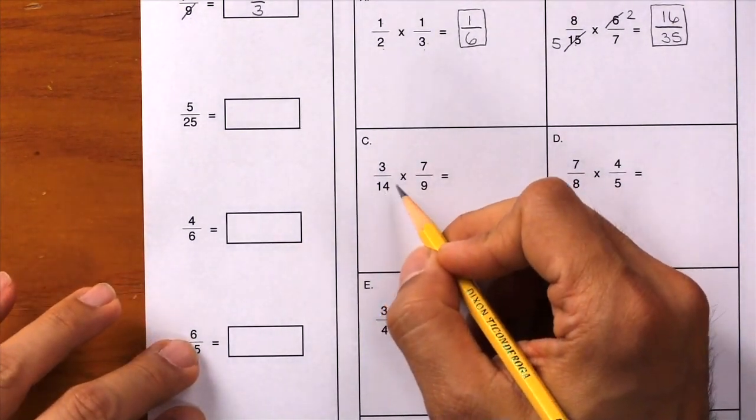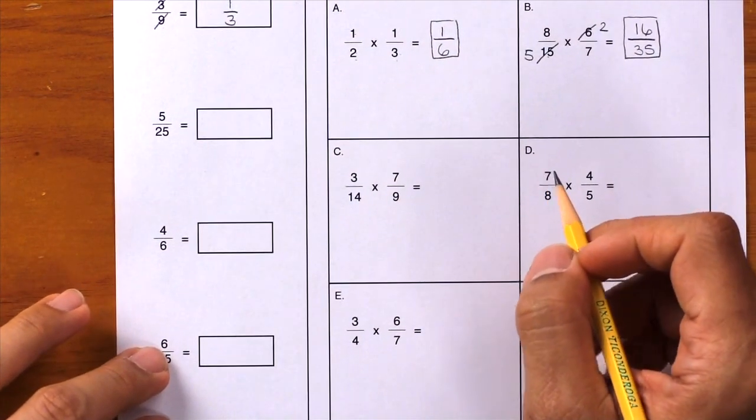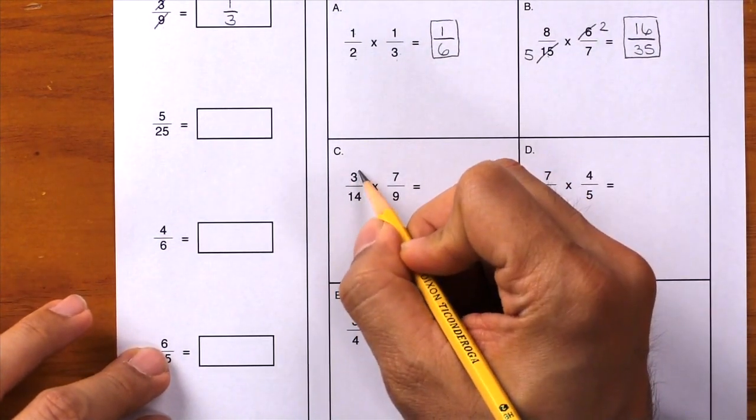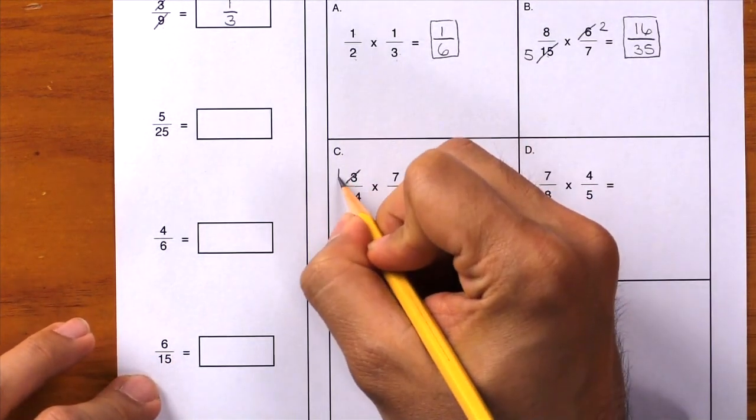Here we have 3/14 times 7/9. Let's see what we can simplify. We can simplify the 3 and the 9, so divide by 3, divide by 3, and you get 1 and 3.